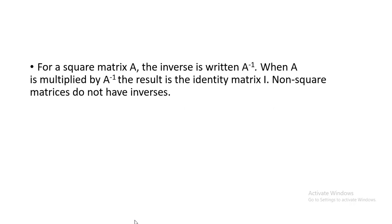The topic is inverse of a matrix. Now for a square matrix A, the inverse is written as A inverse, where A is multiplied by A inverse and the result is the identity matrix. Non-square matrices do not have inverses. Inverses are only calculated for a square matrix, not for a non-square or rectangular matrix. A square matrix has the same number of rows and columns. A inverse is written as A to the minus 1, pronounced as A inverse.